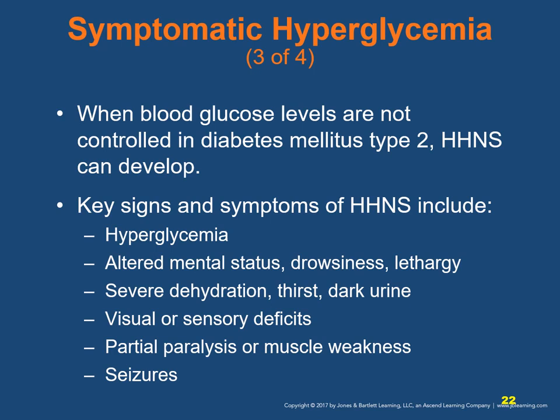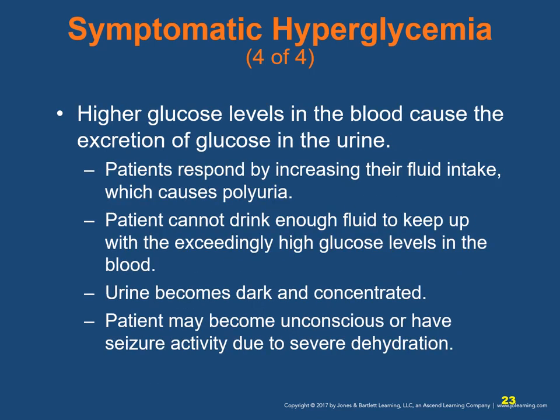Key signs and symptoms of HHNS include hyperglycemia, altered mental status, drowsiness, lethargy, severe dehydration, thirst, and dark urine. It can also result in visual or sensory deficits, partial paralysis, muscle weakness, and seizures. Higher glucose levels cause excretion of glucose in the urine; patients respond by increasing fluid intake, causing polyuria. In HHNS, the patient cannot drink enough fluid to keep up with the exceedingly high glucose levels, and may become unconscious or have seizure activity due to severe dehydration.